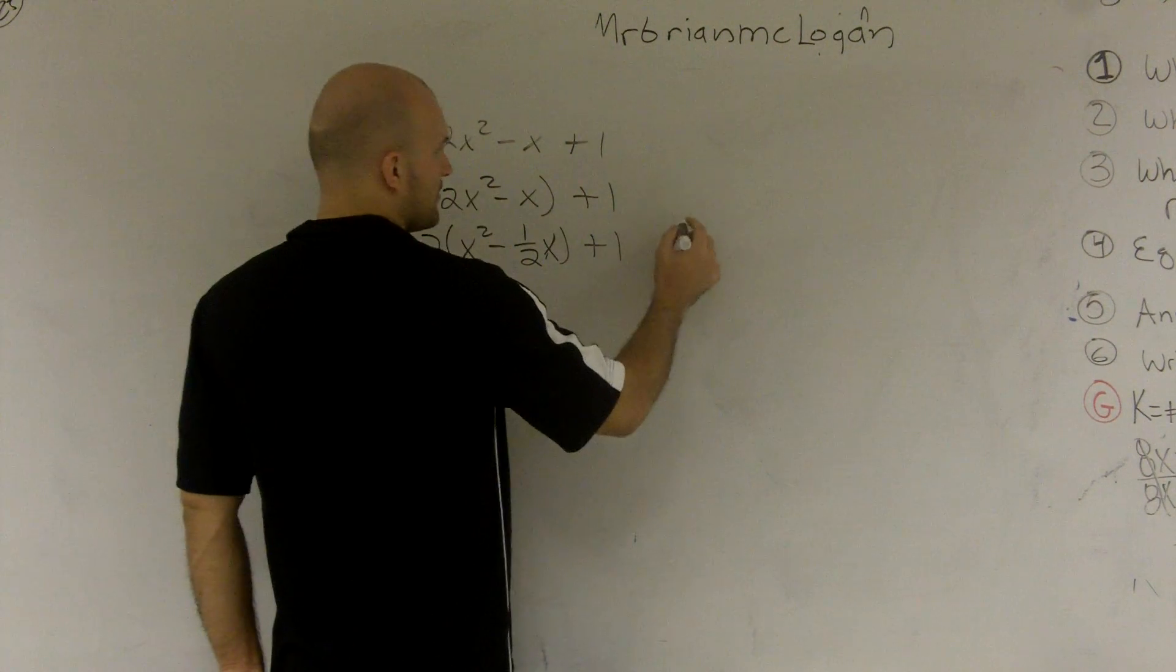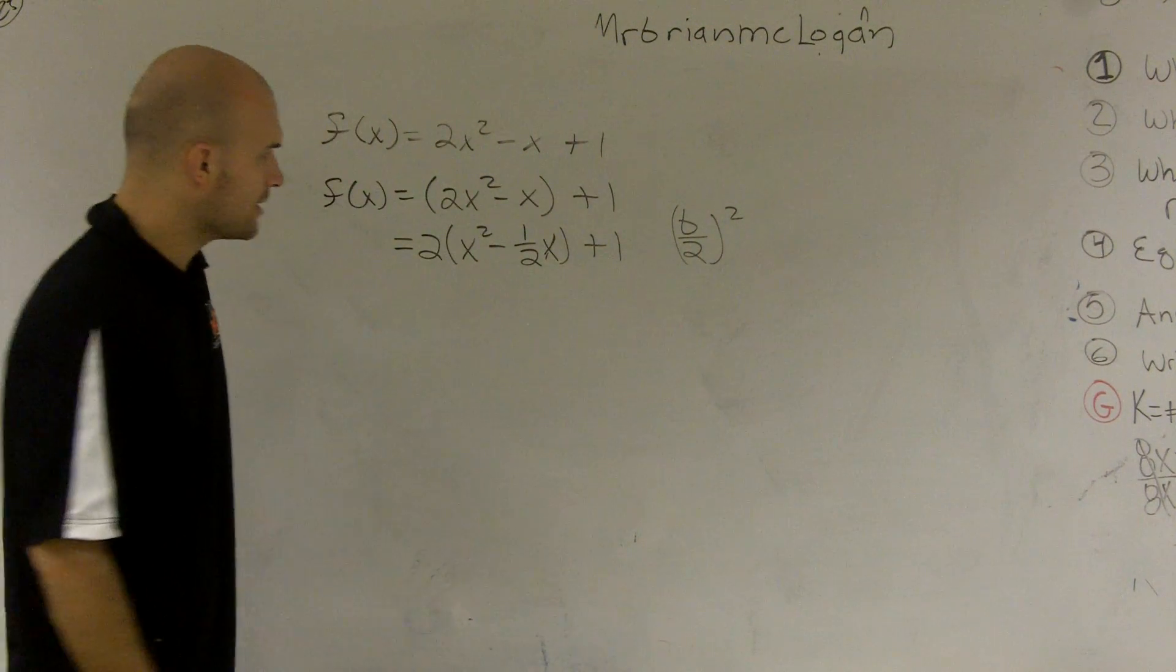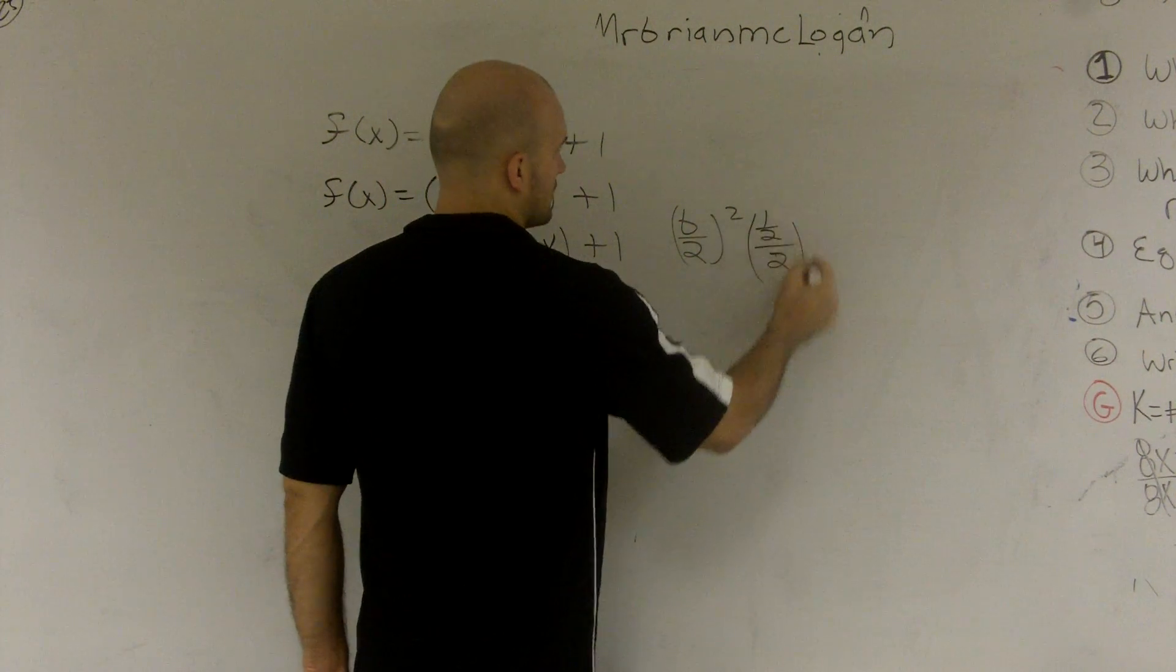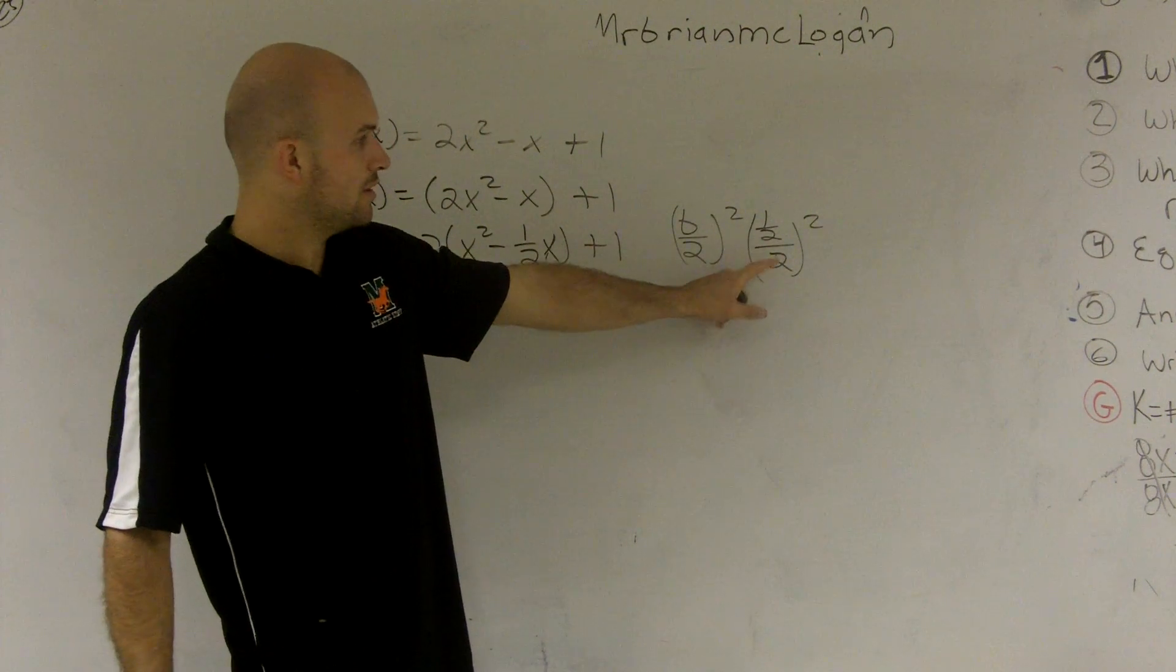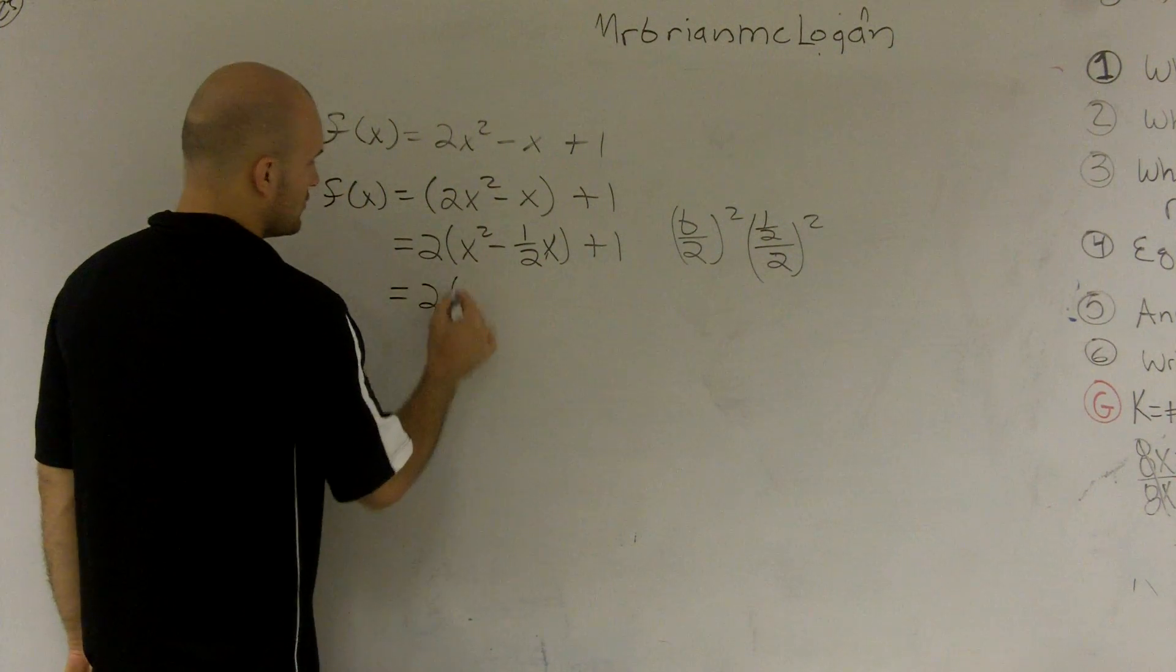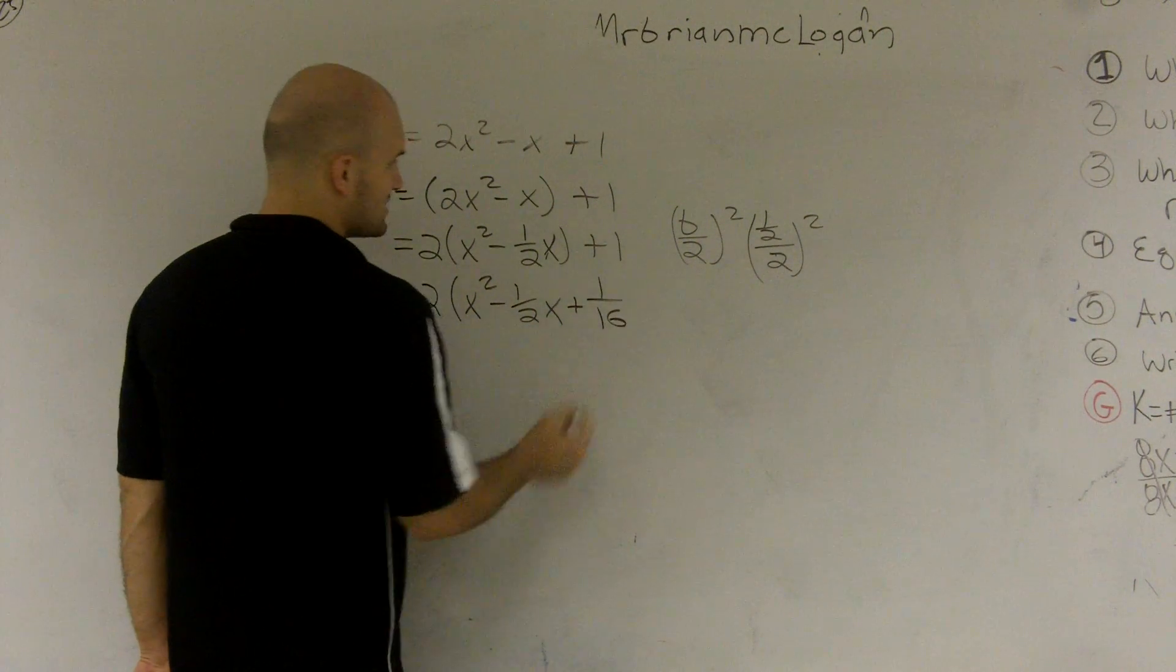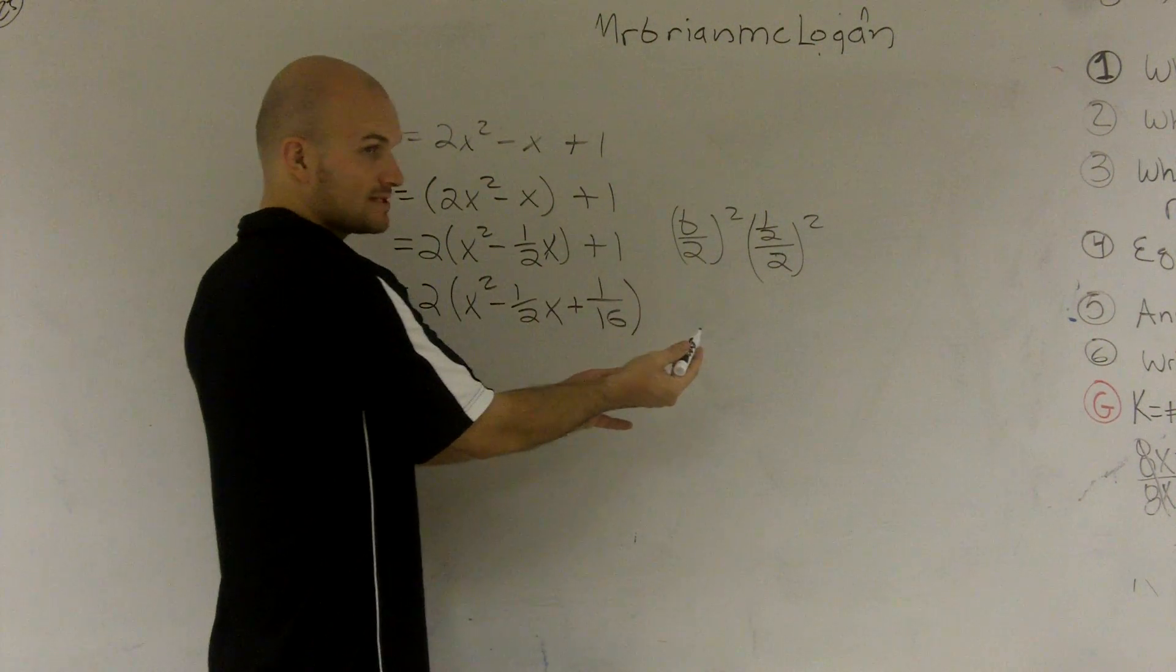So now I have to do my b over 2 squared. So I have negative 1 half divided by 2 squared. So 1 half divided by 2 is 1 fourth. 1 fourth squared is going to be 1 sixteenth. So I have 2 times x squared minus 1 half x. And then I'm going to add 1 sixteenth. Whenever you add 1 sixteenth, you also have to subtract 1 sixteenth.